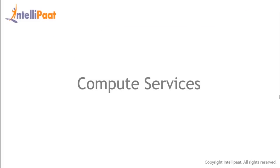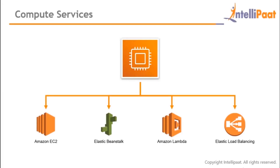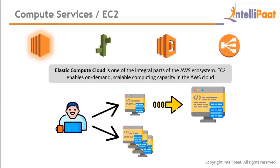Under compute services, the first and most integral is Amazon EC2 (Elastic Compute Cloud). EC2 allows users to rent virtual computers to run their own applications, providing on-demand scalable computing capacity in the AWS cloud. For example, if you own a Mac and want to run a Windows application, you can opt for a virtual machine on AWS, run it for a short time, and pay only for what you use.